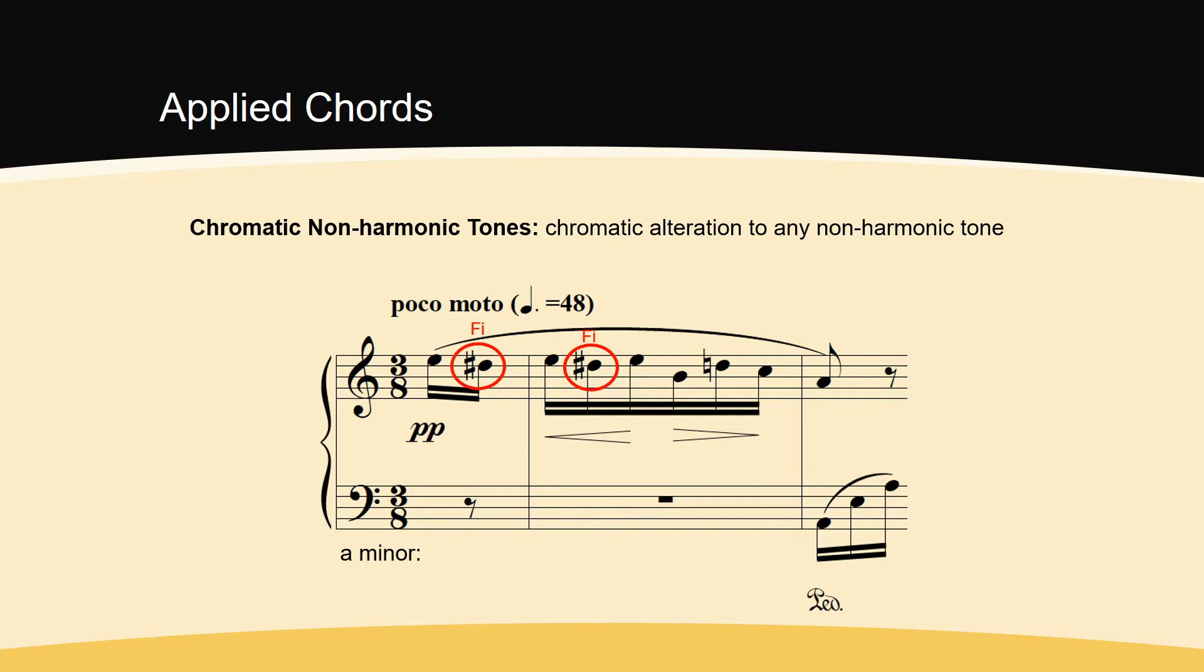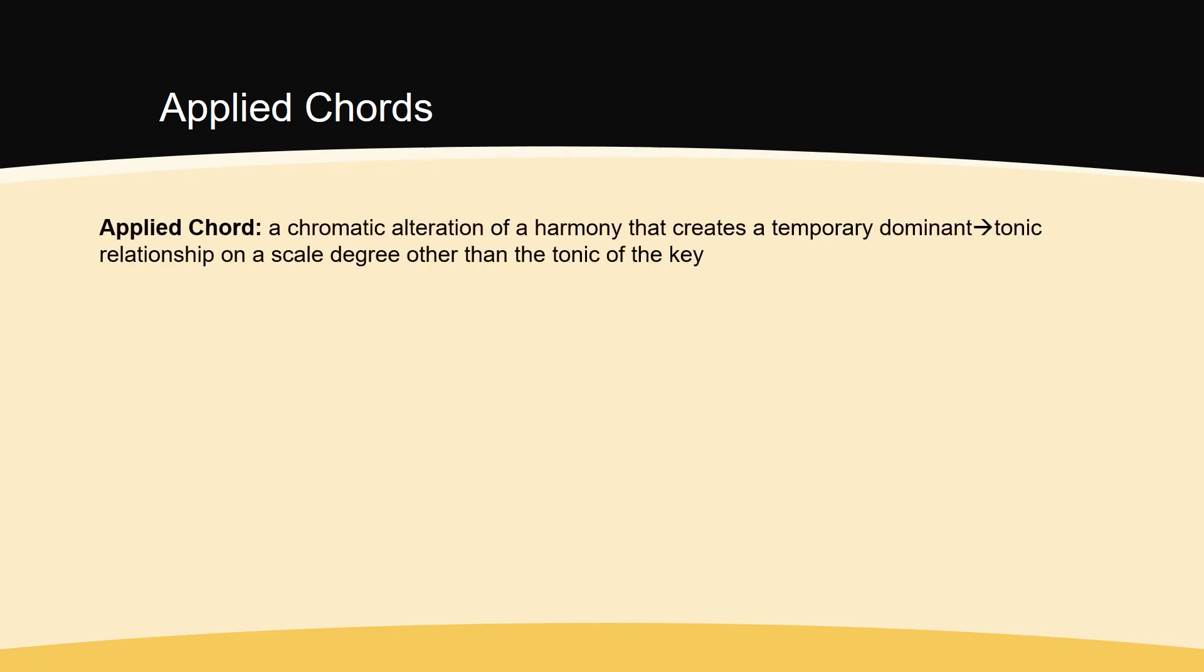Composers use chromaticism to extend passages, or to emphasize cadences, through the use of applied chords. An applied chord, also known as a secondary dominant or secondary leading tone chord, is a chromatic alteration of a harmony that creates a temporary dominant tonic relationship on a scale degree other than the tonic of the key.